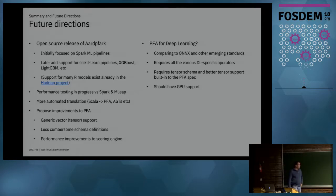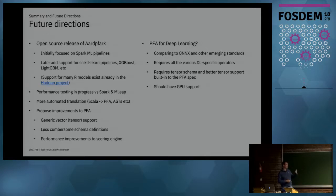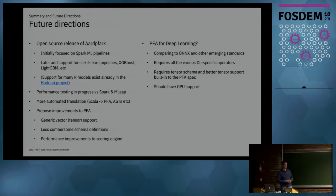For future directions: this is not yet open source, but we are working on getting it to a state where it can be released, starting with Spark ML pipelines and then adding support for scikit-learn, XGBoost, LightGBM, and other projects. R support already exists in the Hadrian project. We're also doing performance testing versus Spark and versus MLeap, trying to tease out where the performance issues are.